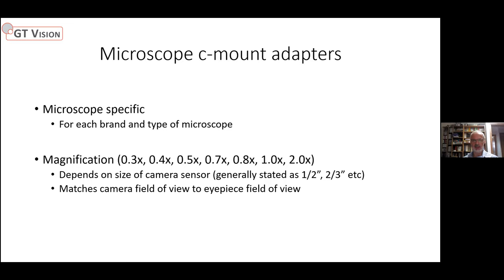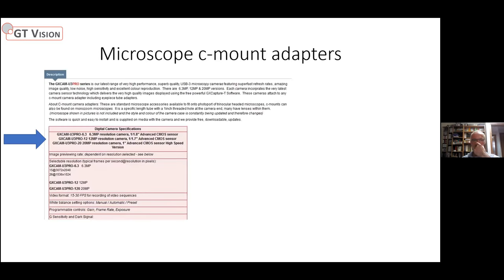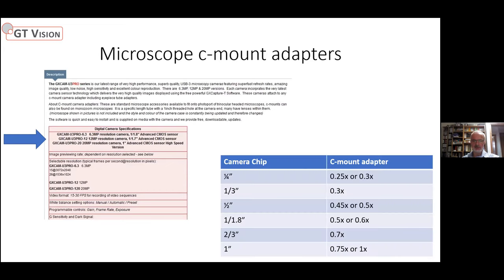You can use a higher magnification adapter to get bigger magnification, but generally matching the eyepiece to the camera display is a nice way to do it. Our website shows cameras like the U3 Pro 20, which has a one-inch sensor, and the U3 Pro 6.3, which has about a half-inch sensor. For a half-inch sensor you need around a 0.5x c-mount, and for a one-inch sensor you need a 0.75 or 1x c-mount adapter. Using these tables you can match the camera and adapter quite nicely.